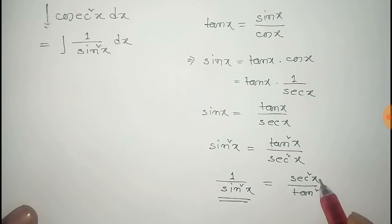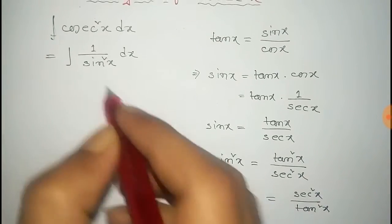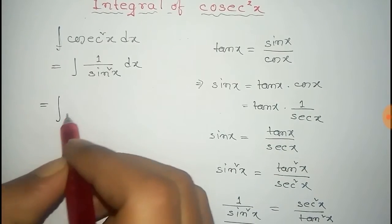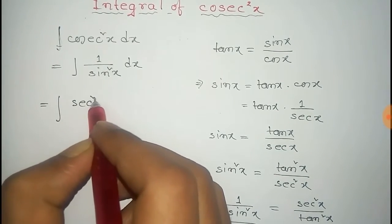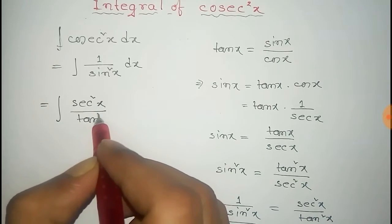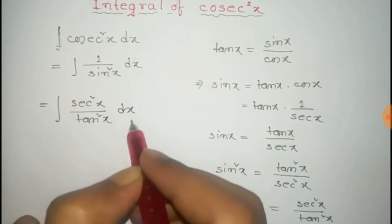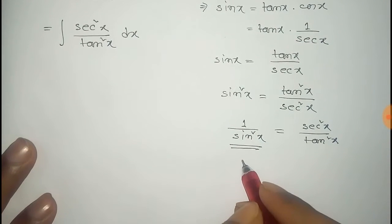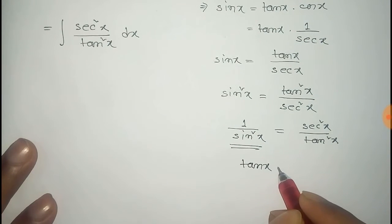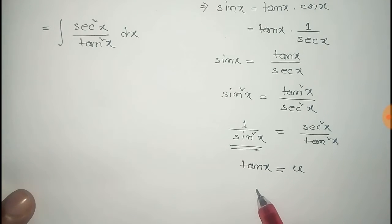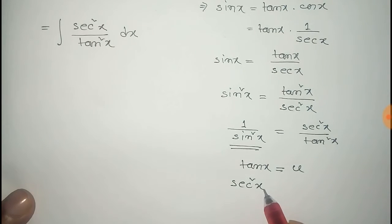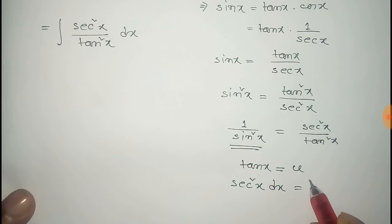Now we have to put this value of 1 by sin squared x into the integral. So we put this value: the integral becomes integral of sec squared x by tan squared x dx. Now consider tan x equal to another variable u. Differentiating both sides of this equation we get sec squared x dx equal to du.